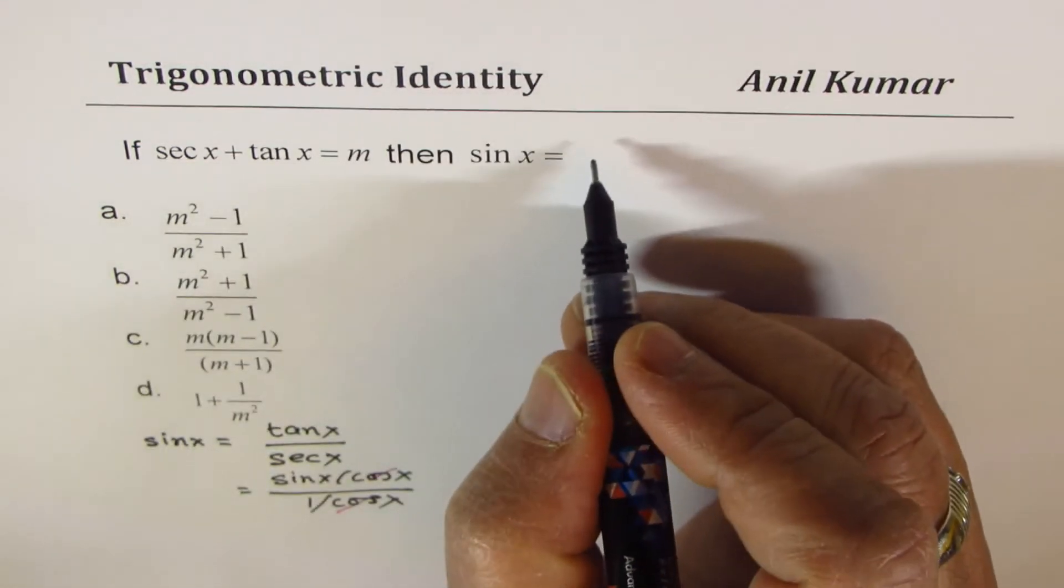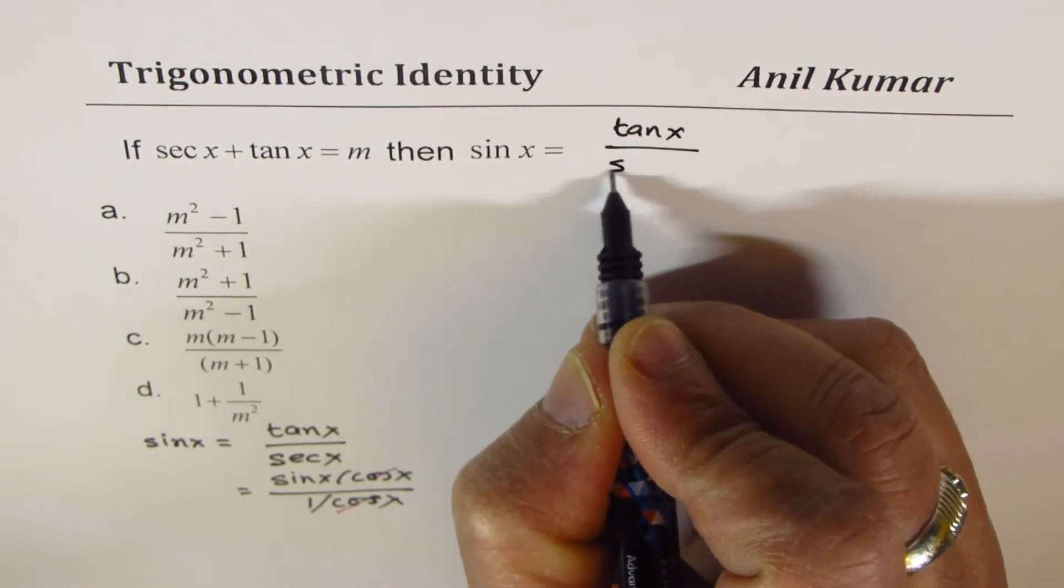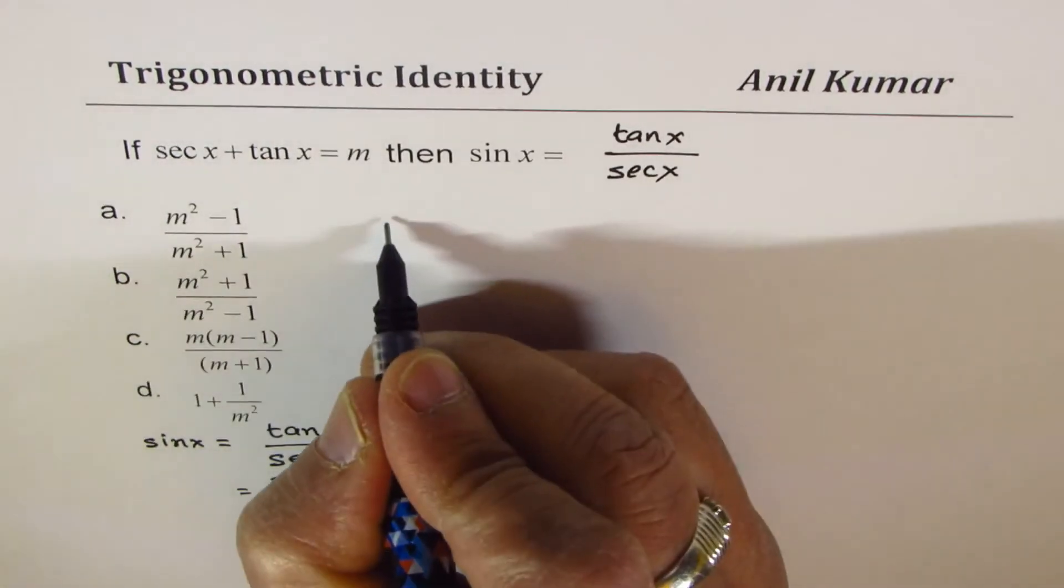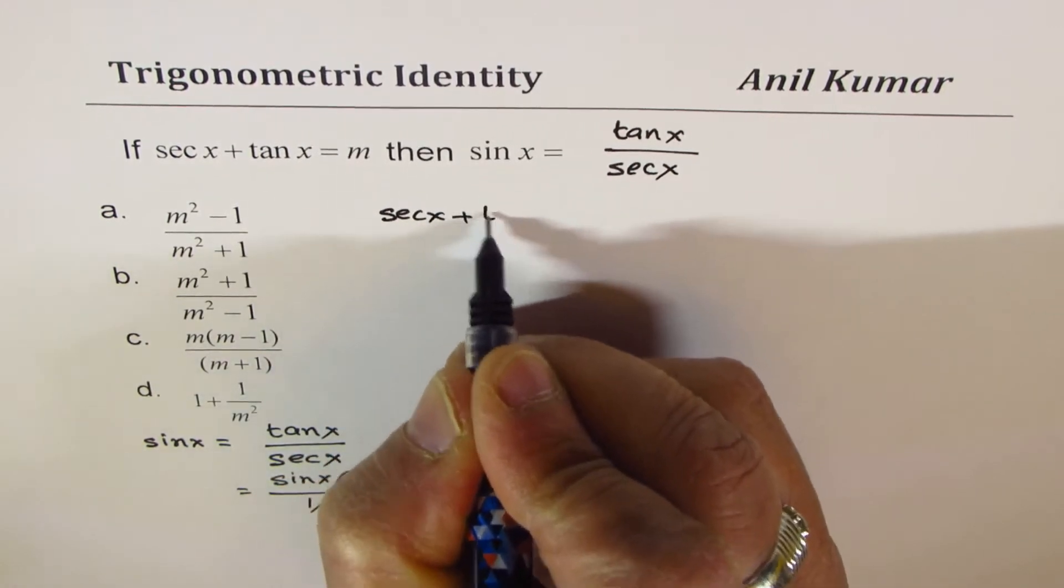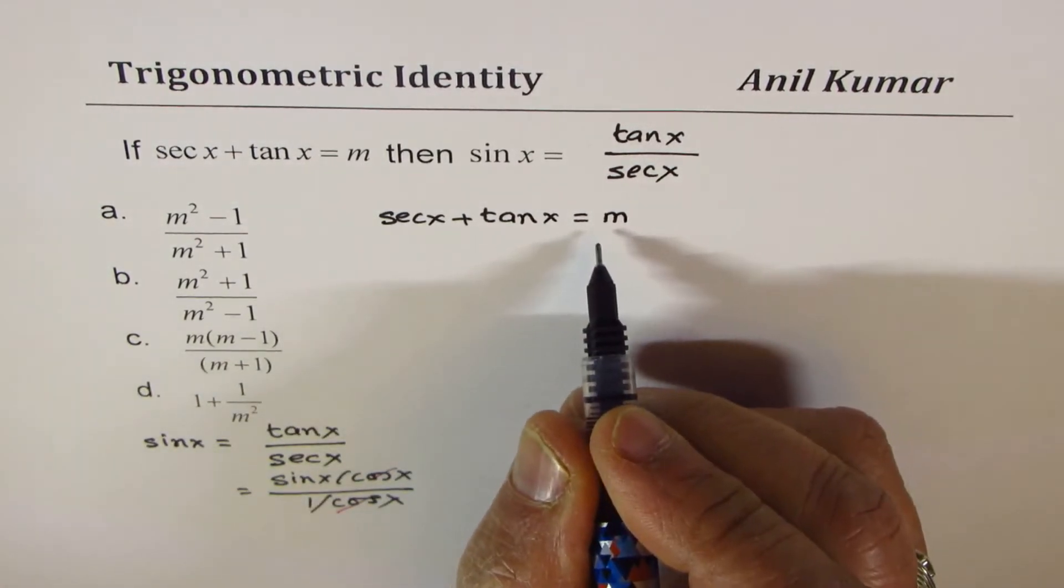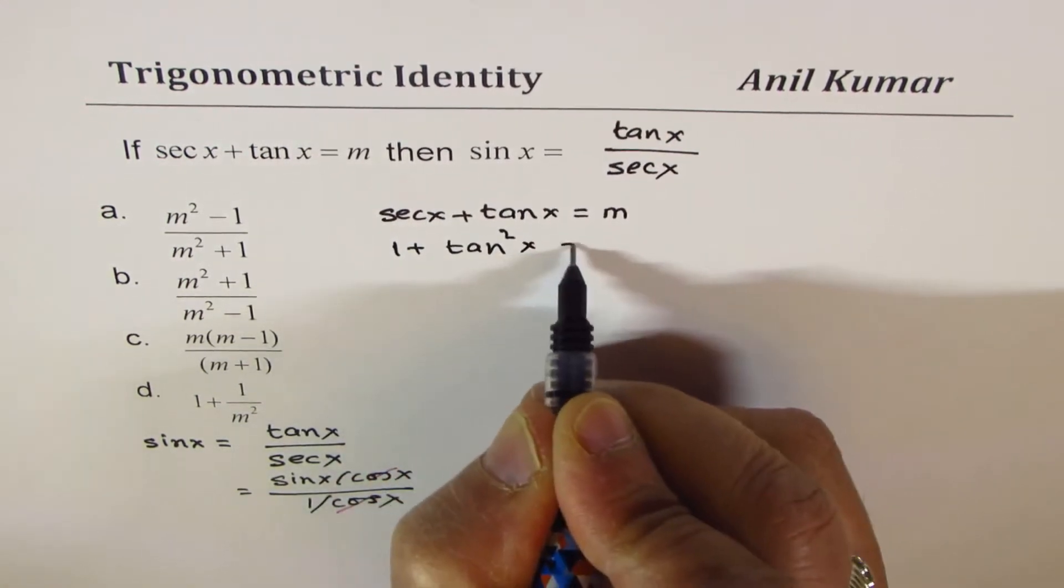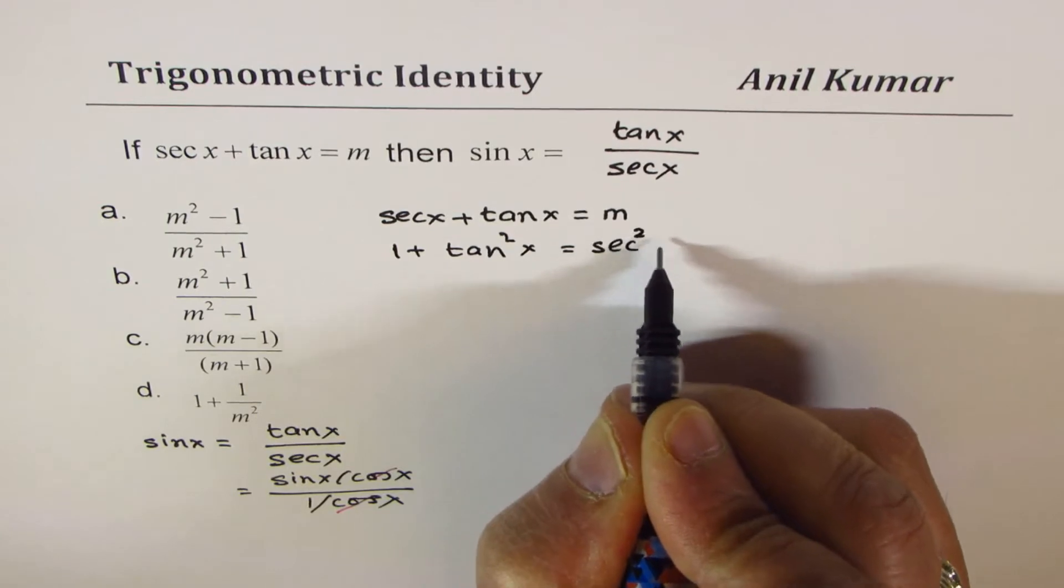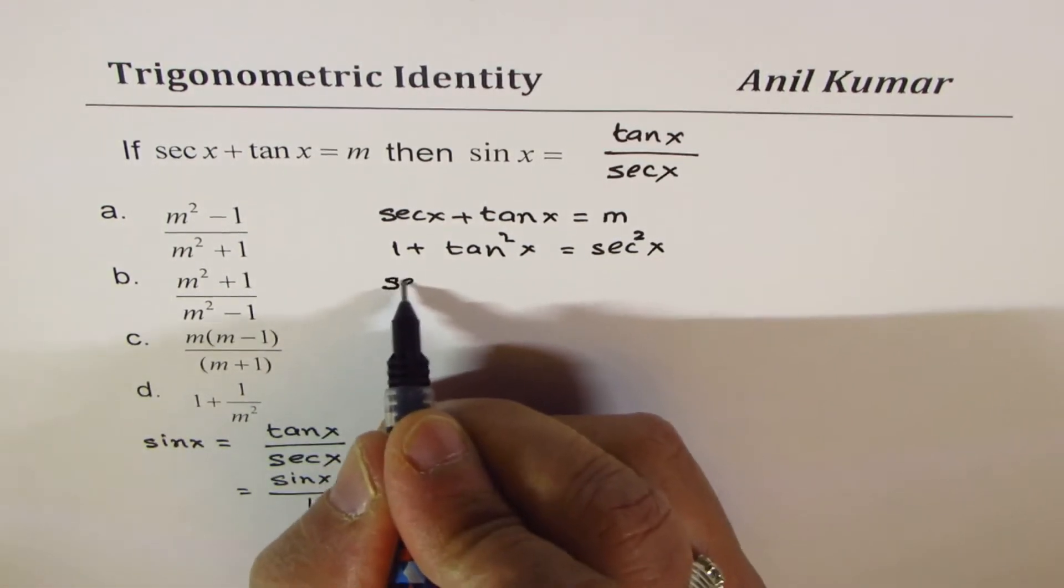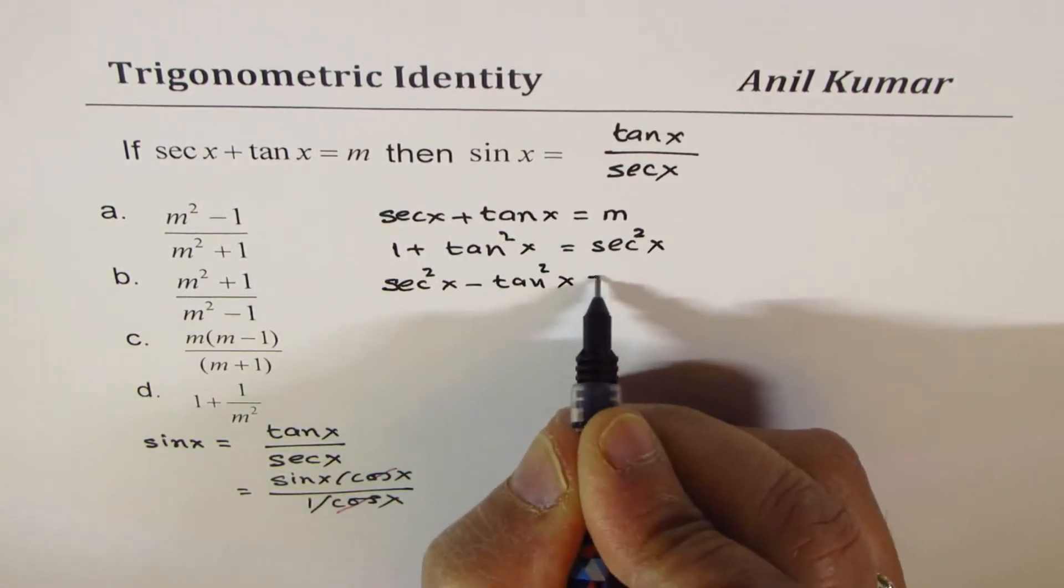Sin x is basically ratio of tan x and secant x. So let me write down this as ratio of tan x and secant x. Now, we have equation which says secant x plus tan x is equal to m. We also know one identity, which is 1 plus tan square x is secant square x, correct? So if I rearrange and write down like this, secant square x minus tan square x, that will be equal to 1.